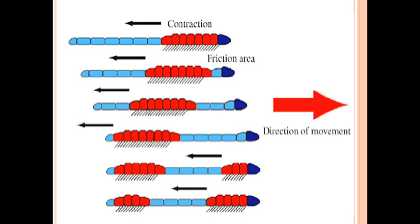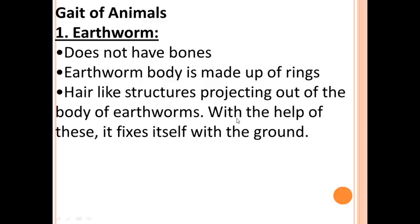The earthworm follows the principle of relaxation and contraction, but can only move a small distance with every move. To go forward, the earthworm stretches its body; to go backward, it contracts its body. Remember: forward means stretching, backward means contraction. The earthworm does not have bones, the body is made up of rings, hair-like structures called bristles fix it to the ground. Write these notes in your notebook.